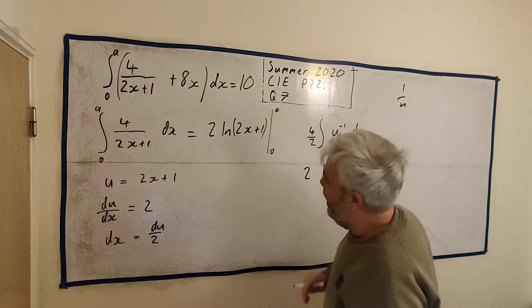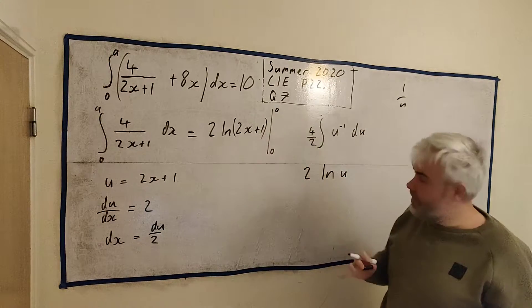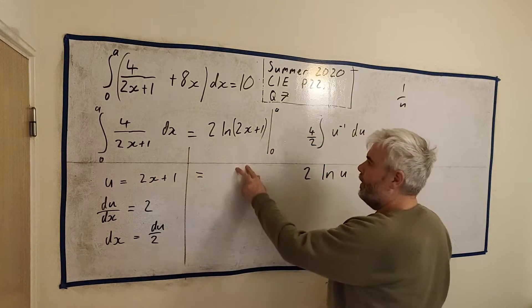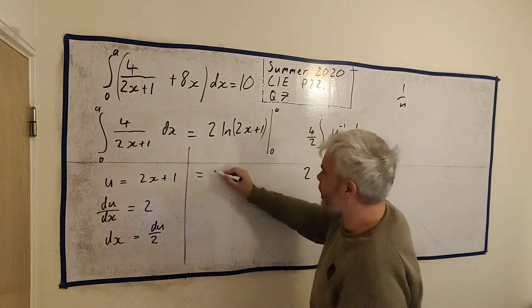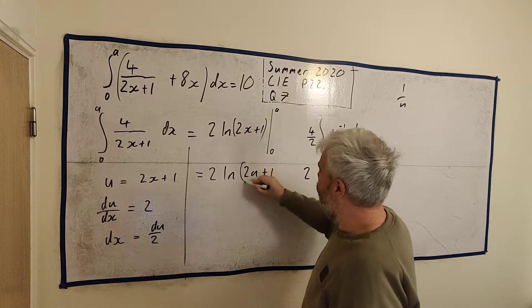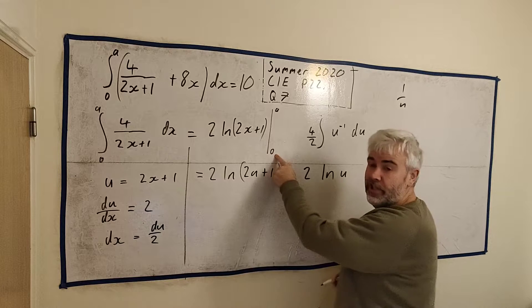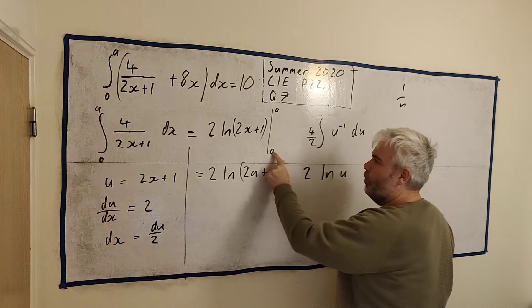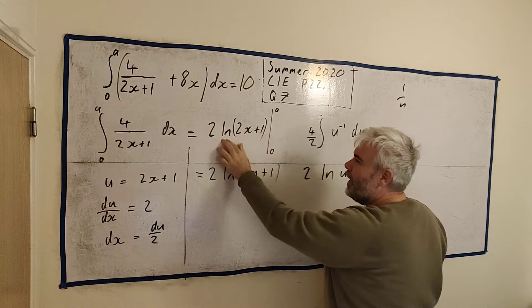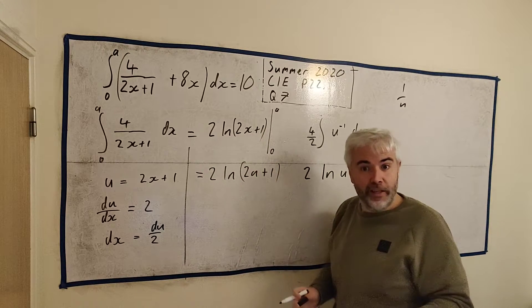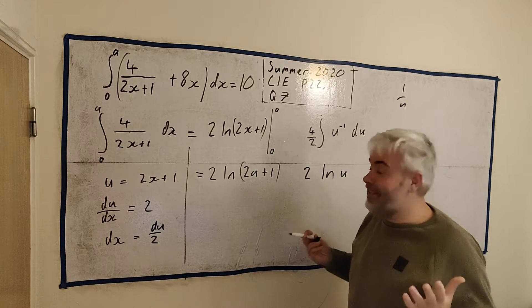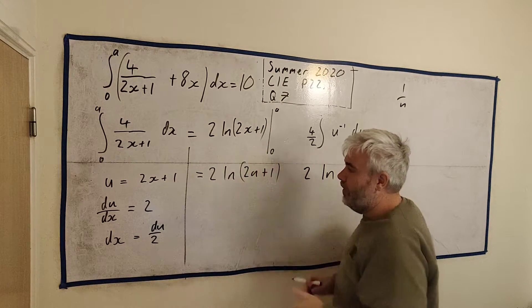So let's integrate this. This is just 2 outside. The integral of u to the power of minus 1, it's a special case, 1 over u if you would rather look at it that way. And the integral is just natural log. So natural log u in this case. And that's it. That's the integral of this, which nearly gives us this. We just change u back.